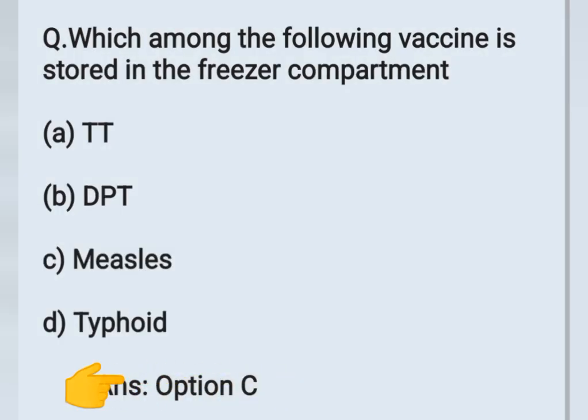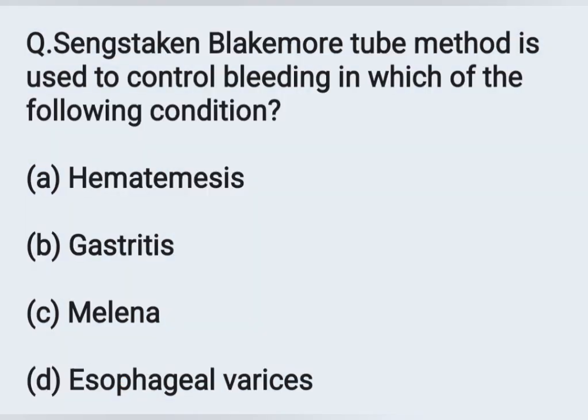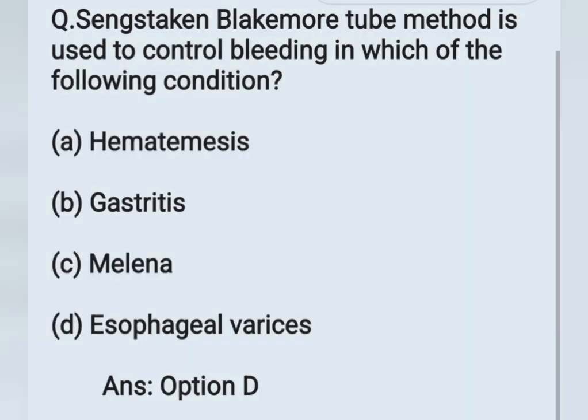The next question: Sengstaken-Blakemore tube method is used to control bleeding in which of the following conditions? Option A: hematemesis, Option B: gastritis, Option C: melena, Option D: esophageal varices. The Sengstaken-Blakemore tube is a three-lumen tube used to control bleeding in case of esophageal varices. Option D is the correct answer.